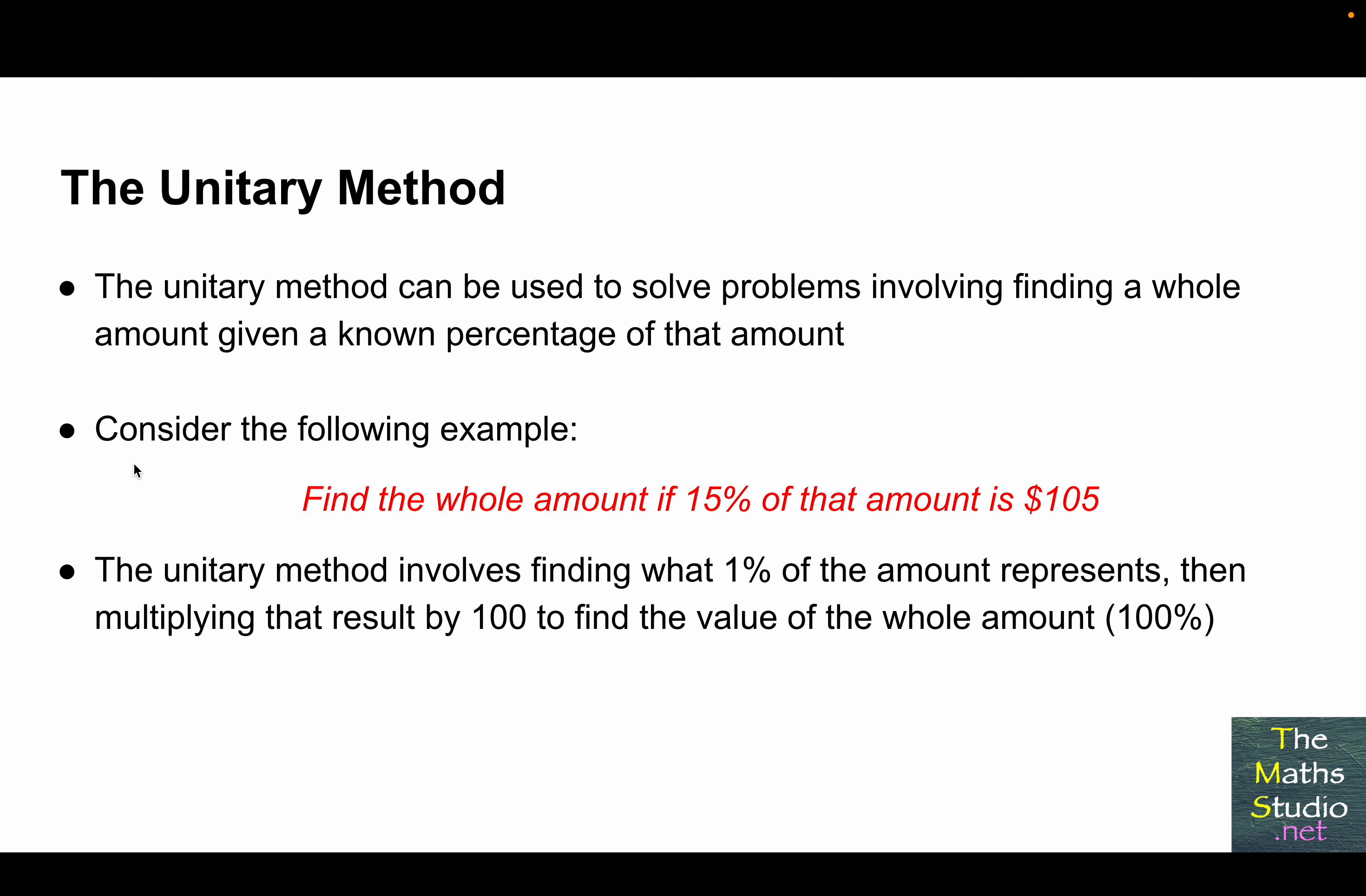Consider the following example. Find the whole amount if 15% of that amount is $105. The unitary method involves finding what 1% of the amount represents, then multiplying that result by 100 to find the value of the whole amount, which is 100%.